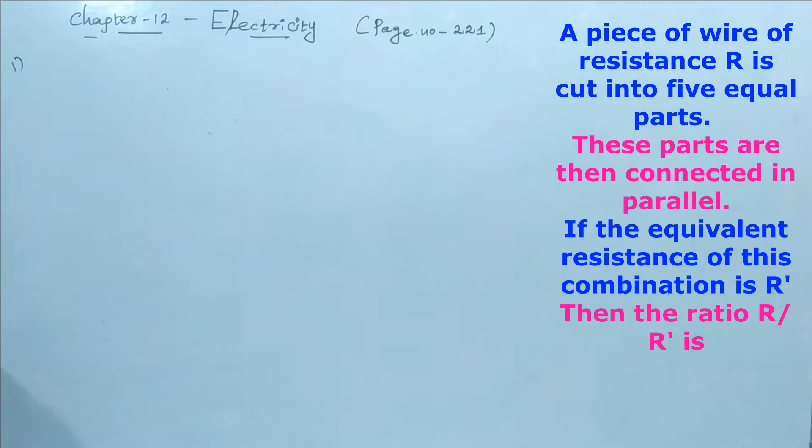If the equivalent resistance of this combination is R', then the ratio of R and R' is what we need to find.